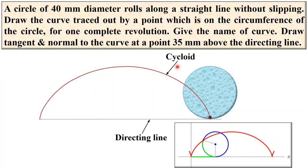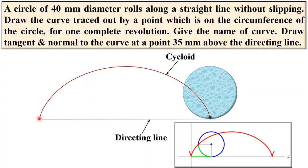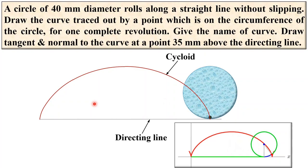This is a very simple concept. Now you should be very clear about the terminology: the directing line is the fixed straight line on which the rolling circle rolls. The diameter given for this rolling circle is 40 mm. Let us see how to draw this curve step by step.